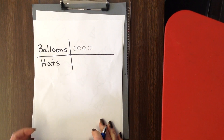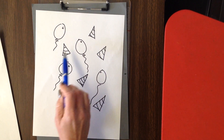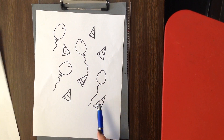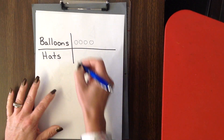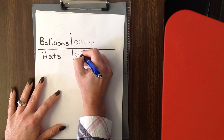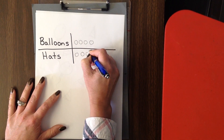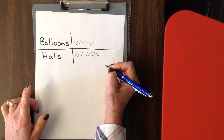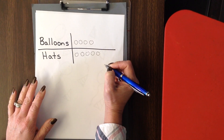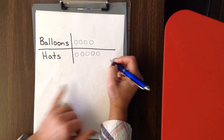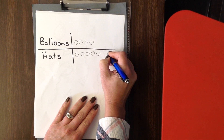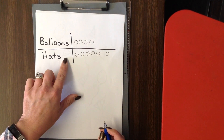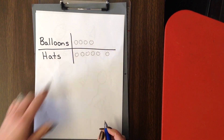Let's go ahead and count the hats. We've got one, two, three, four, five, six. We have six hats. So we have one, two, three, four, five. Now remember we're grouping these by groups of five, so since I'm going straight out I'm going to leave a little bit of a gap here before I start making the next one for six. So we have six hats and we have four balloons.